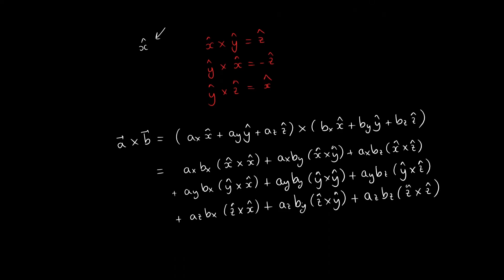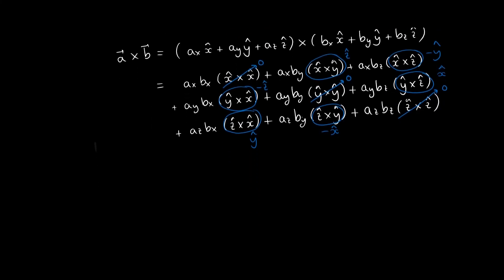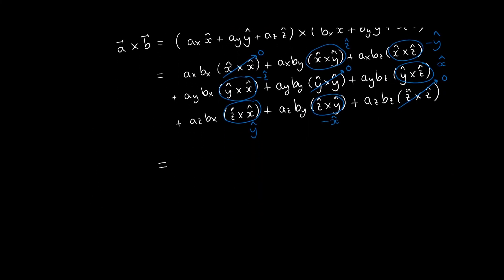Now we can simplify some of these cross products between unit vectors, for example, all the ones that are with themselves will be equal to zero, while all the other combinations can be figured out if we draw quickly the three unit vectors x, y, z, and then we can figure out what all the cross products are by using the right hand rule. So that we can finally write the following mathematical formula for the cross product between two vectors in Cartesian coordinates.